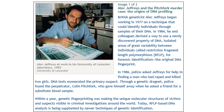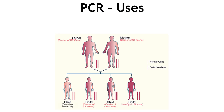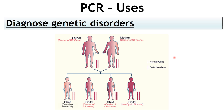Another potential use is diagnosing genetic disorders. For example, cystic fibrosis — people with cystic fibrosis unfortunately don't tend to live very long, maybe until the age of 40, some will die in their 30s. If you were carrying the gene for cystic fibrosis, there's a moral question and a personal question as to whether you want to know. That's something which can be done using PCR — diagnosing genetic disorders.